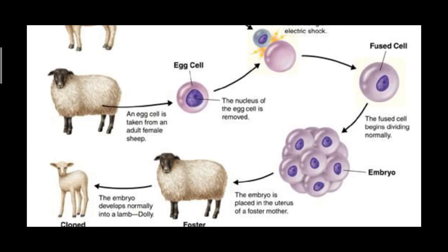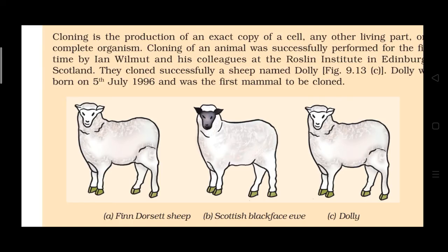The egg thus produced was implanted into the Scottish Blackface ewe. The fused cell divided to form an embryo, which was placed in the uterus of the Scottish Blackface ewe. Development followed normally and finally Dolly was born. Comparing Dolly with the Scottish Blackface ewe that carried her, Dolly did not show any character of the Scottish Blackface ewe. Dolly was found to be absolutely identical to the Finn Dorset sheep from which the nucleus was taken, because the nucleus from the Scottish Blackface ewe's egg had been removed.